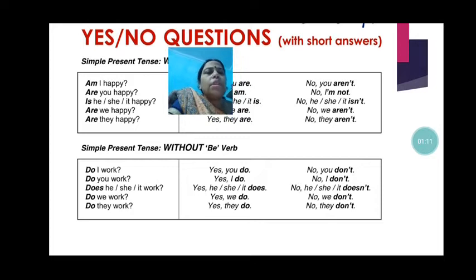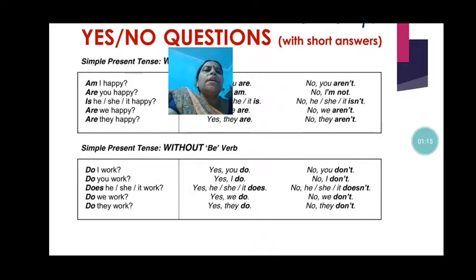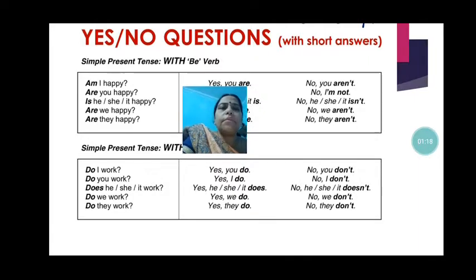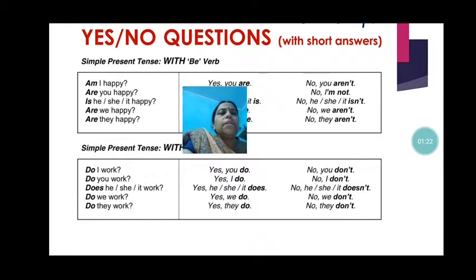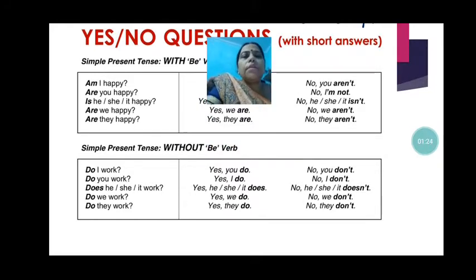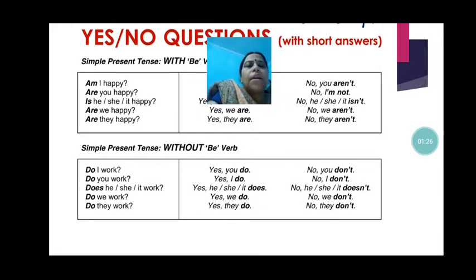Now, without the be form — when there is no be form. The be verb forms are am, is, are. Without the be verb, that is do, does, did — how will we form the question?